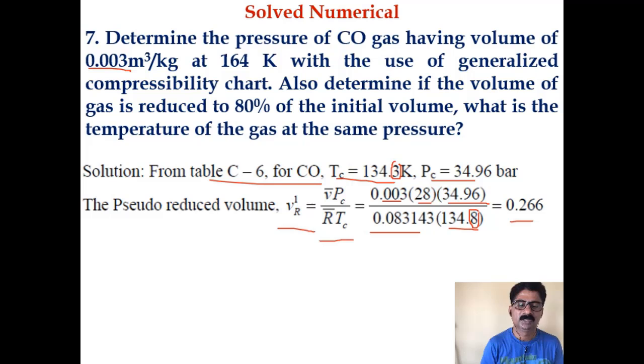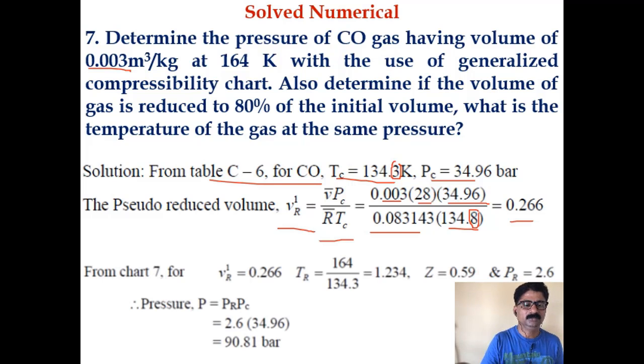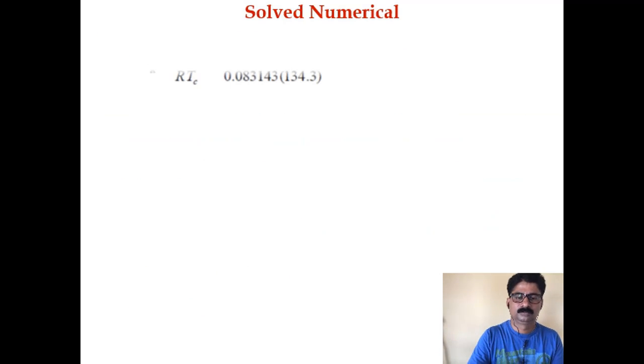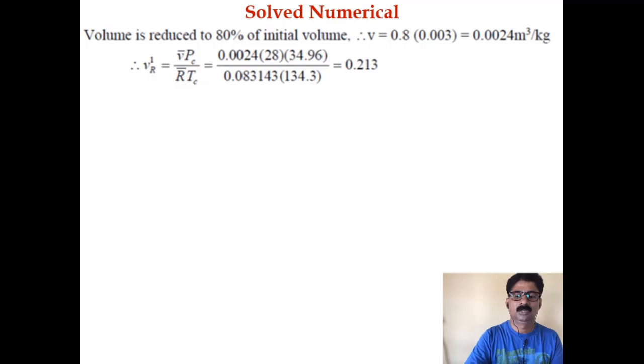Now from chart 7, the generalized compressibility chart, using Vr dash value as 0.266, Tr is 1.234, you'll get Z value as 0.59 and Pr value as 2.26. Once you find out the value of Pr, you can find out the value of P as Pr times Pc, which you will get as 90.81 bar.